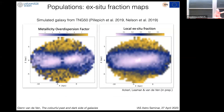As a proof of concept, we took the TNG50 simulation, made an IFU cube of a simulated galaxy, measured the metallicity map, computed the metallicity dispersion sigma-squared, and measured how much each region is above the self-enrichment line — the over-dispersion factor. Because this is a simulation, we know exactly how much of the stars in every region were brought in — the local ex-situ fraction. This is where we want to go observationally: getting a direct handle on the spatially-resolved ex-situ fraction.